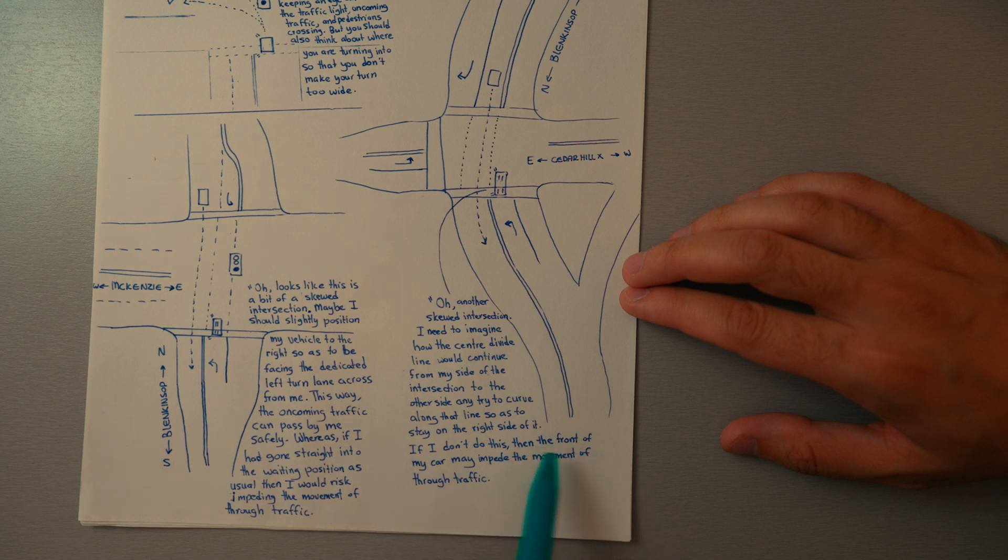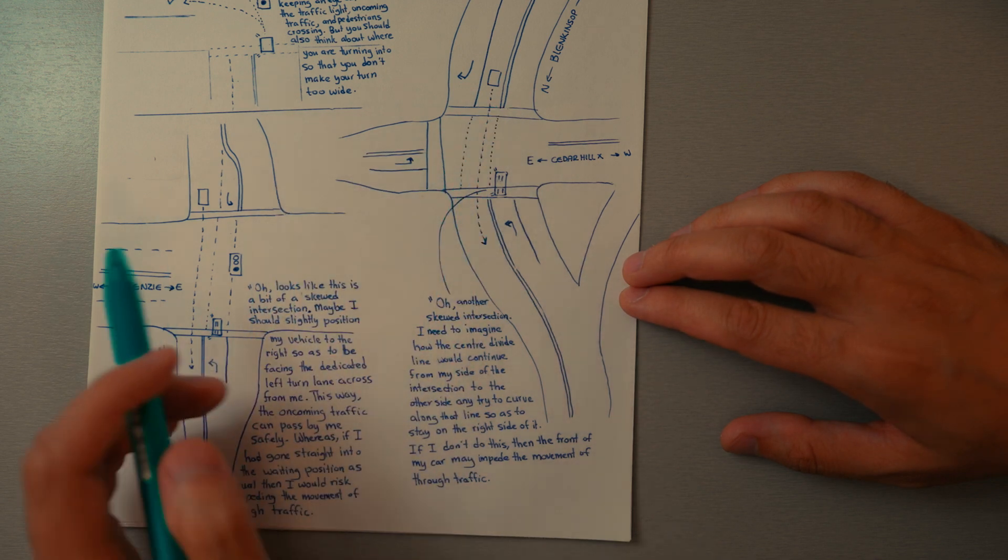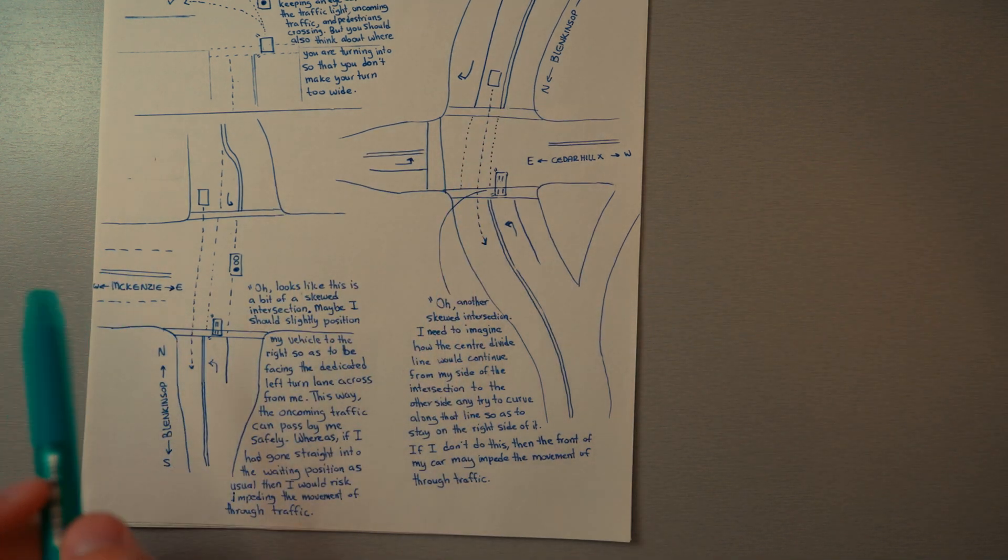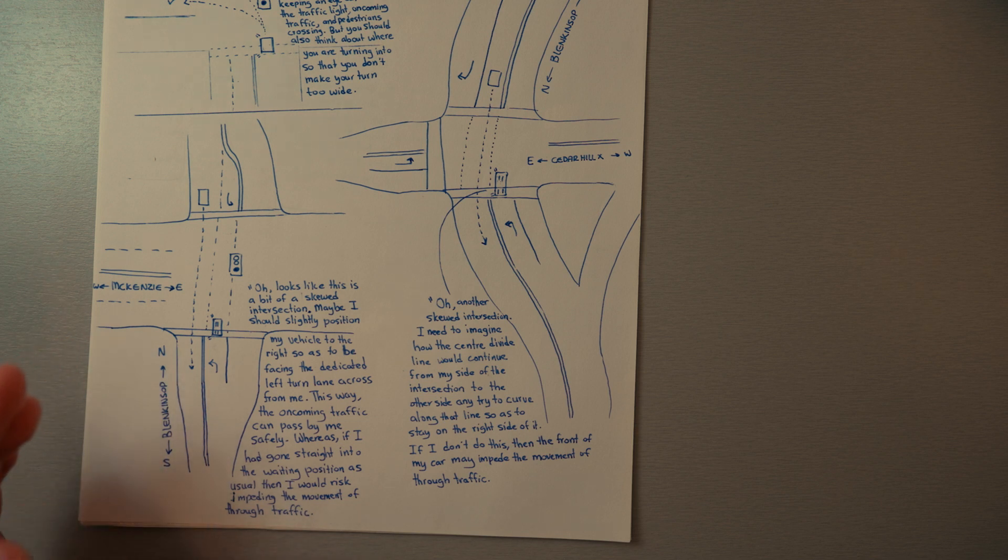If you don't do this, the front of your car will impede the movement of through traffic. So these are things to think about when you're coming up to an intersection and how you want to position your vehicle for a particular maneuver.